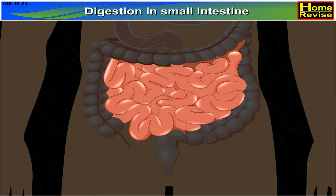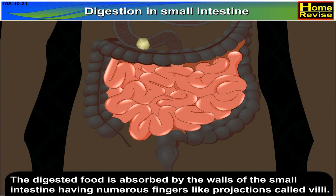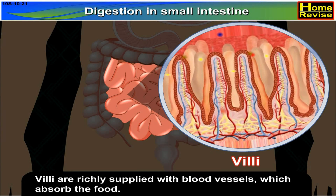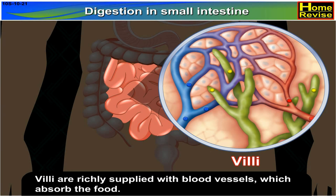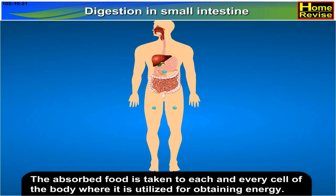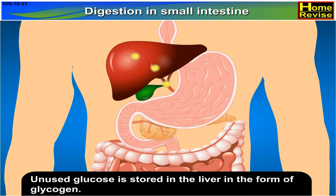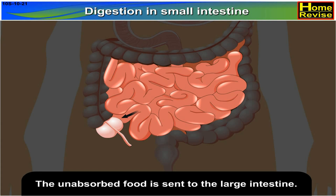The digested food is absorbed by the walls of the small intestine, which have numerous finger-like projections called villi. Villi are richly supplied with blood vessels which absorb the food. The absorbed food is taken to each and every cell of the body where it is utilized for obtaining energy. Unused glucose is stored in the liver in the form of glycogen. The unabsorbed food is sent to the large intestine.